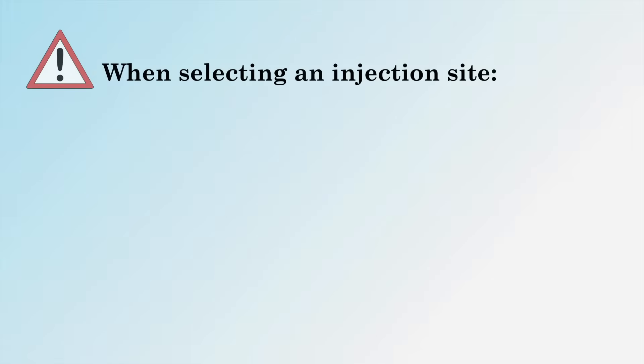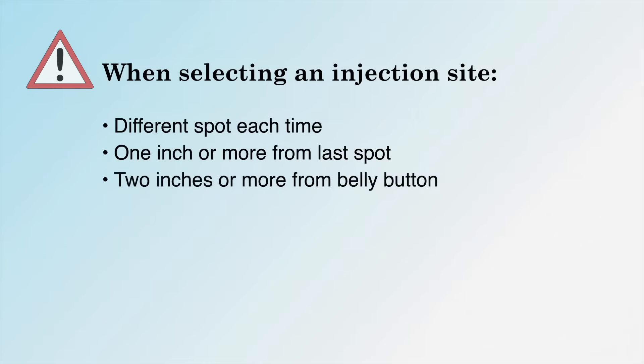When selecting the injection site, be sure you use a different spot each time you give yourself an injection. Leave at least one inch away from the last injection spot. Inject your insulin at least two inches from your belly button, and choose a spot one inch or farther away from any scar or mole.